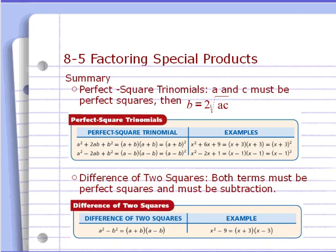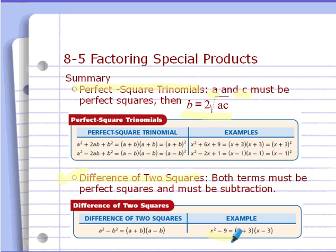To summarize: for perfect square trinomials, A and C must be perfect squares, and B must be twice the square root of A and C. For the difference of two squares, both terms must be perfect squares and you must be subtracting — like x² − 9. If you have polynomials in those forms, your factoring is so much easier and quicker. Good luck, and bring any questions to class.